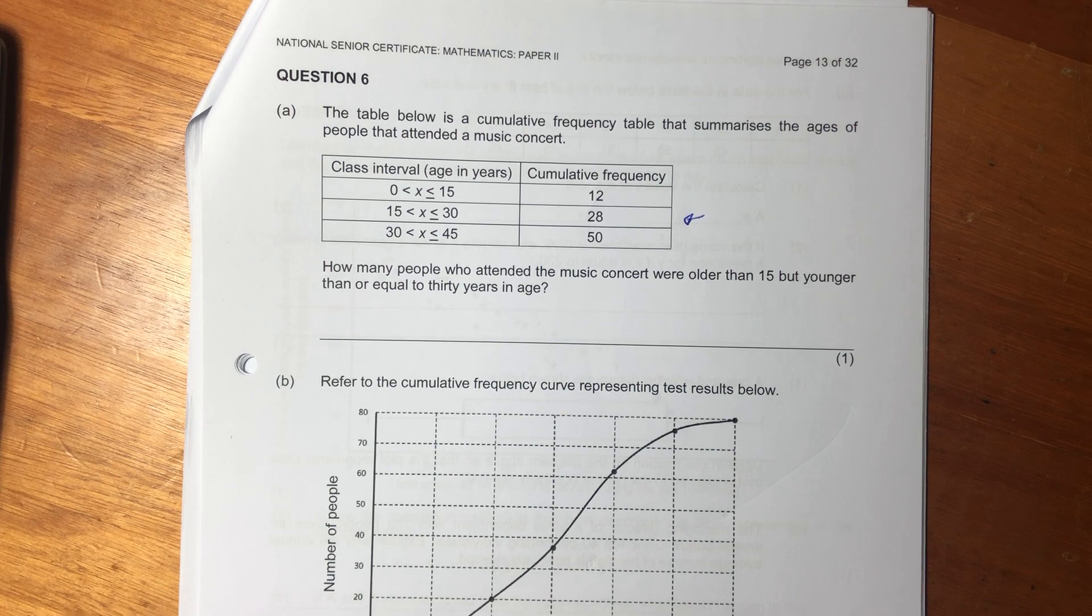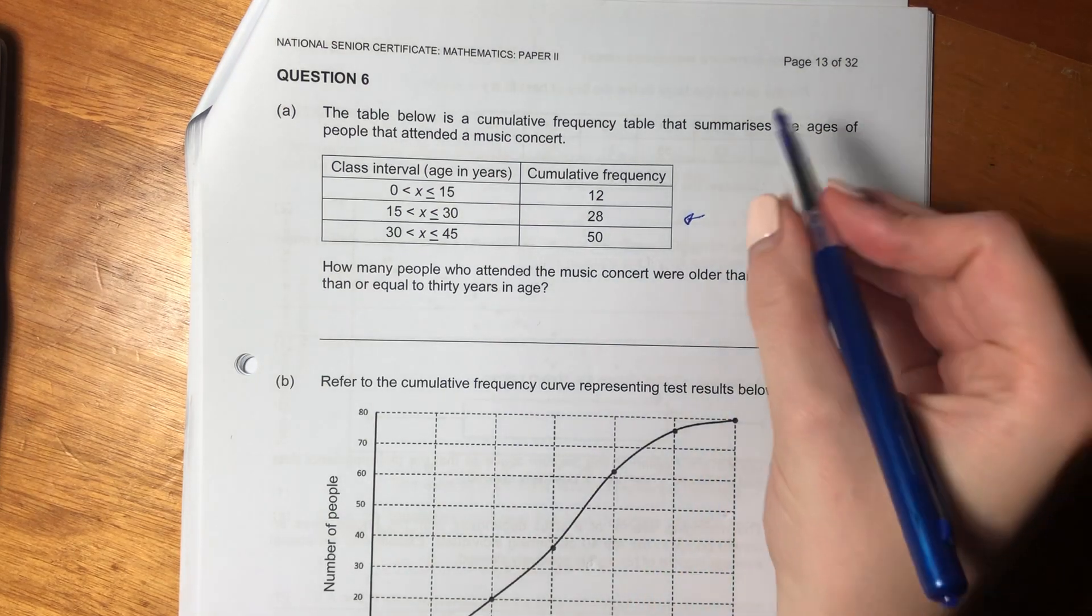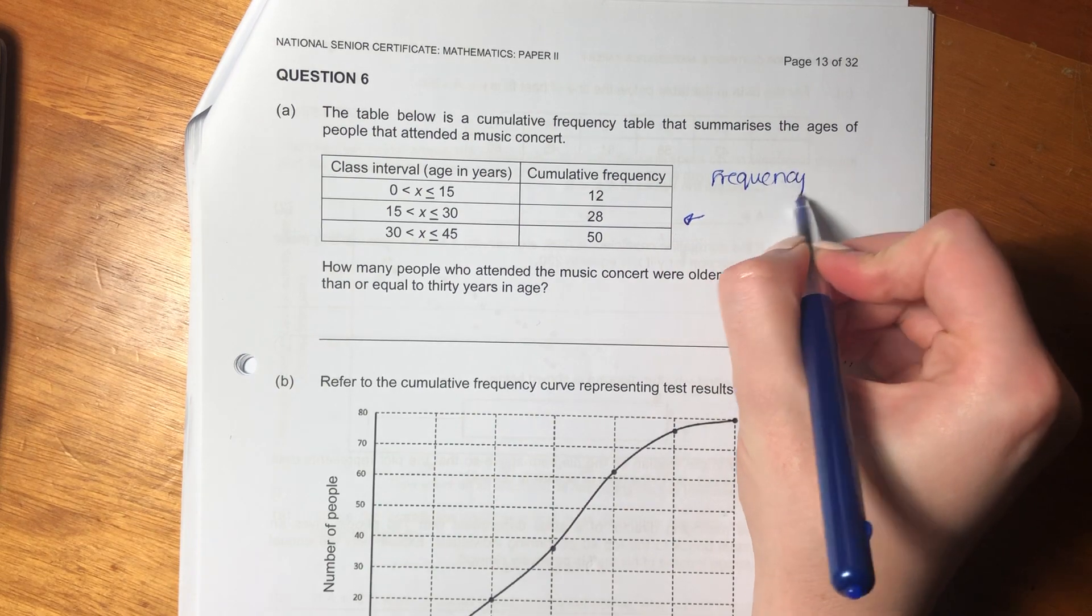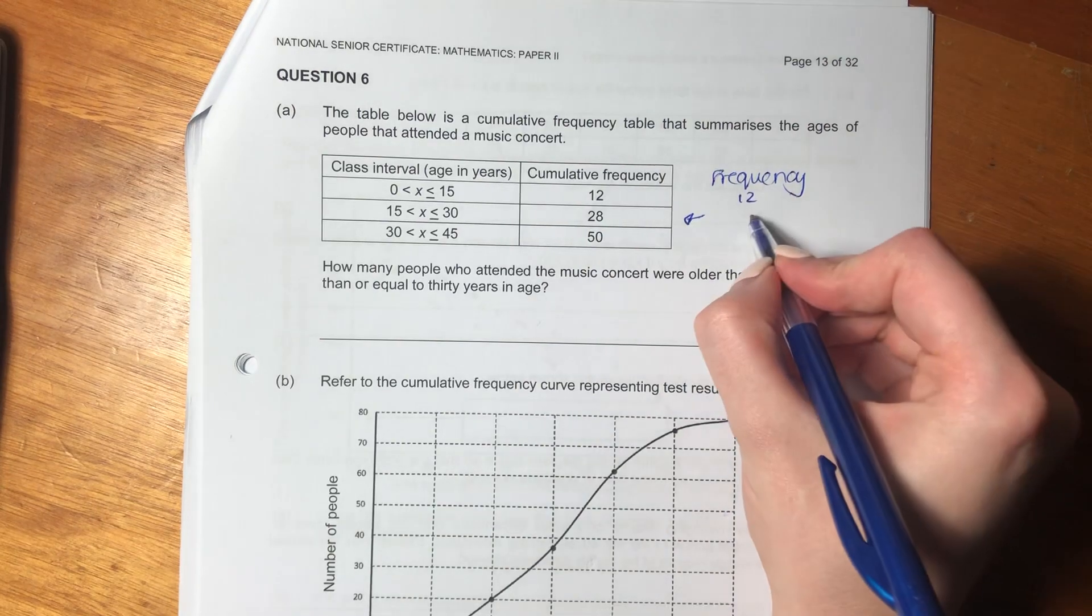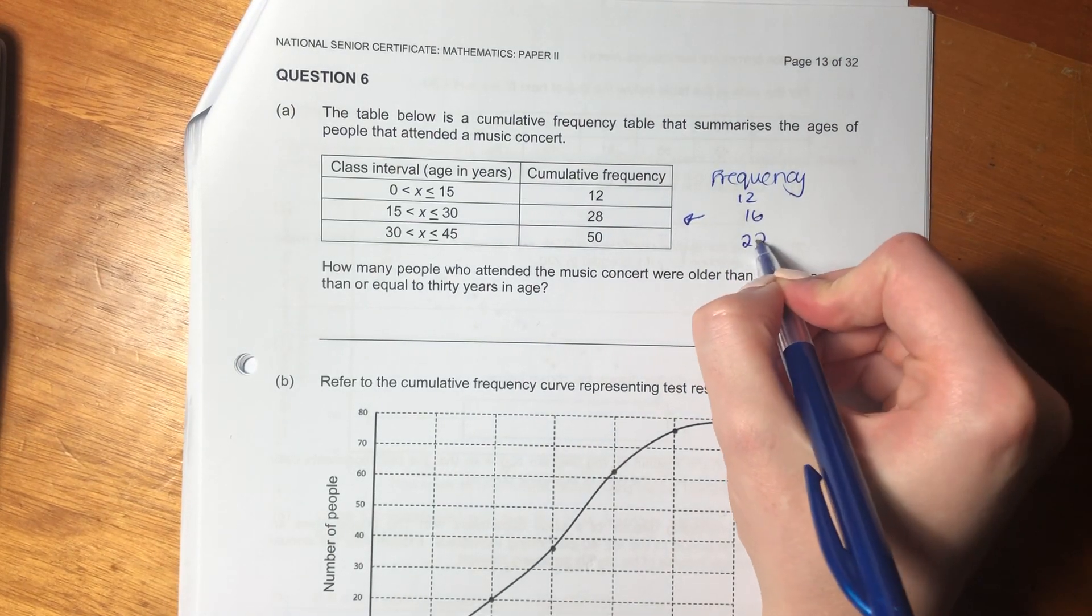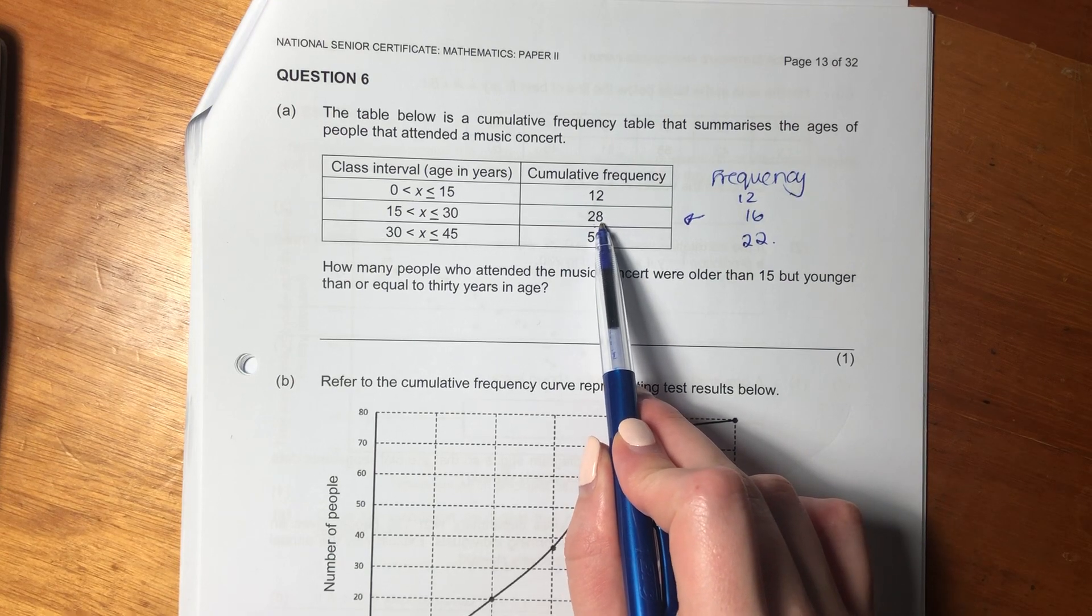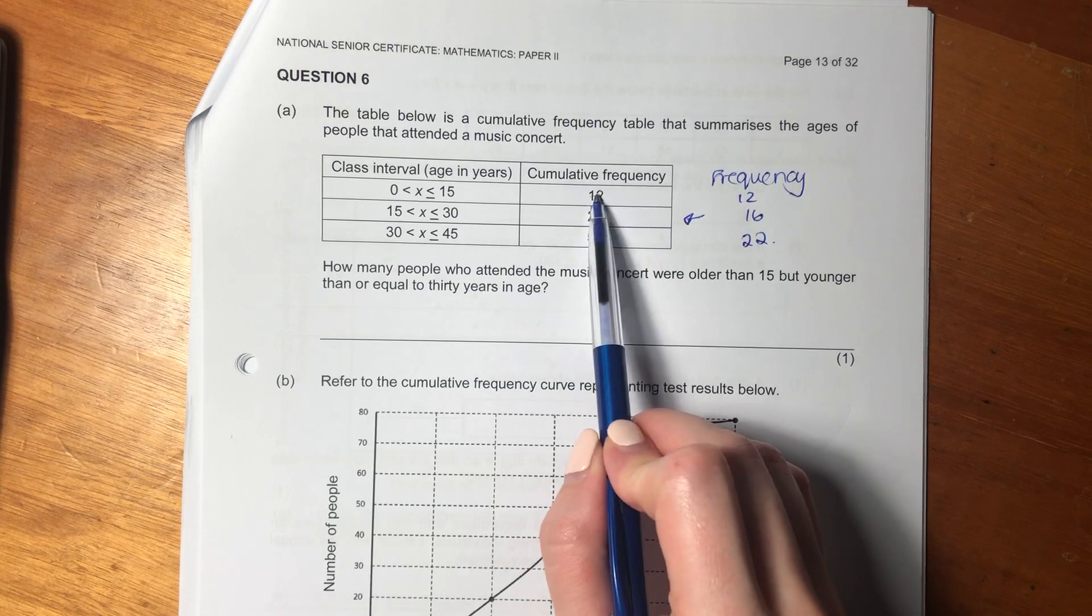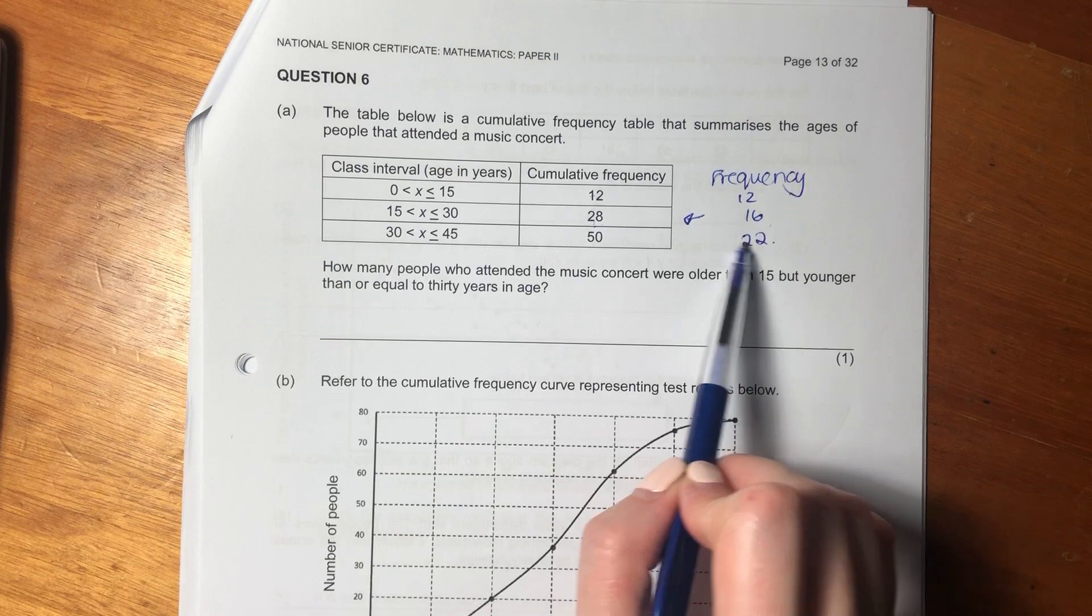Now it's very tempting to just say 28, but that would be wrong because it is a cumulative frequency. If you wanted to just do the frequency of each of these different intervals, this would be 12, this would be 16, and this would be 22 because we want to strip out the amount of people that are actually in the previous categories. So this 28 incorporates the 12. So strip out the 12, there's only 16 that are in there.